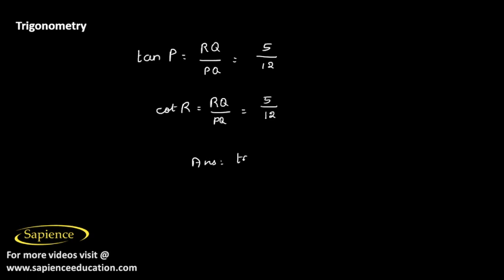So the answer is, tanP is 5 by 12, and cotR is also 5 by 12, and yes, tanP is equal to cotR.